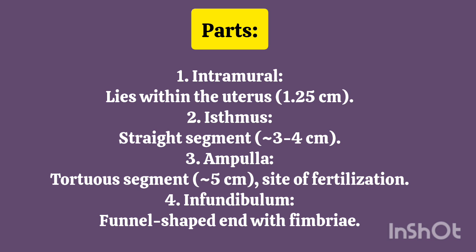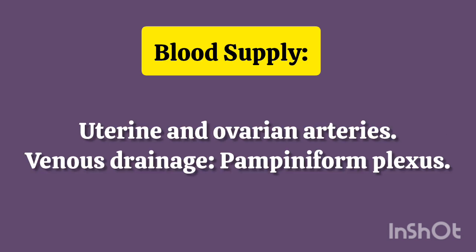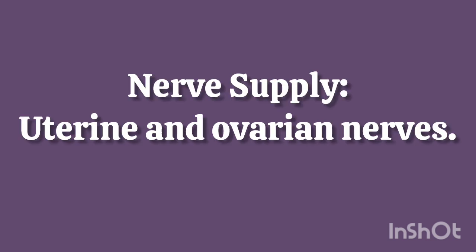4. Infundibulum – Funnel-Shaped with Fimbriae. Functions – Transport Gametes, Facilitate Fertilization and Zygote Survival. Blood Supply – Uterine and Ovarian Arteries. Venous Drainage – Pampiniform Plexus. Nerve Supply – Uterine and Ovarian Nerves.